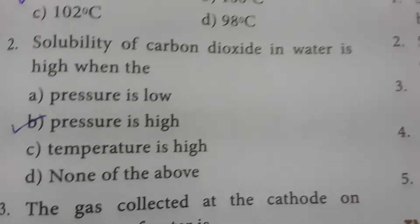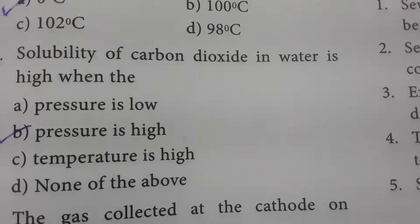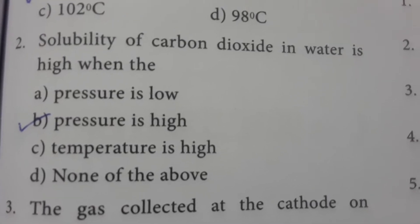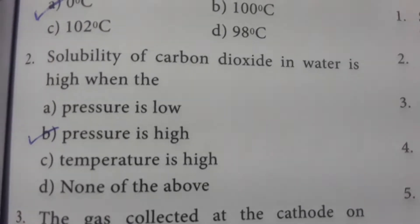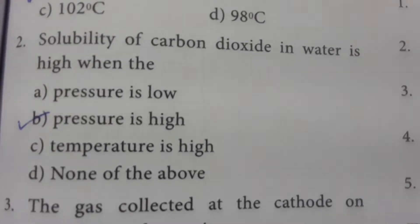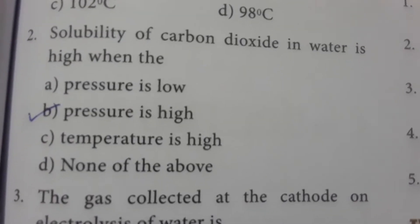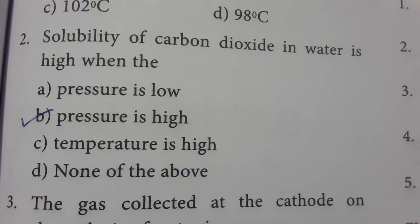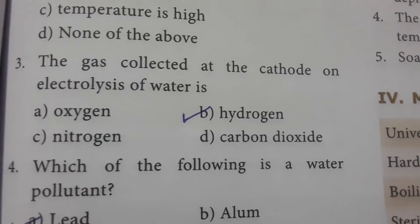Solubility of carbon dioxide in water is high when the pressure is high. If you increase the pressure, the carbon dioxide solubility in water increases. The gas collected at the cathode during electrolysis of water is hydrogen.